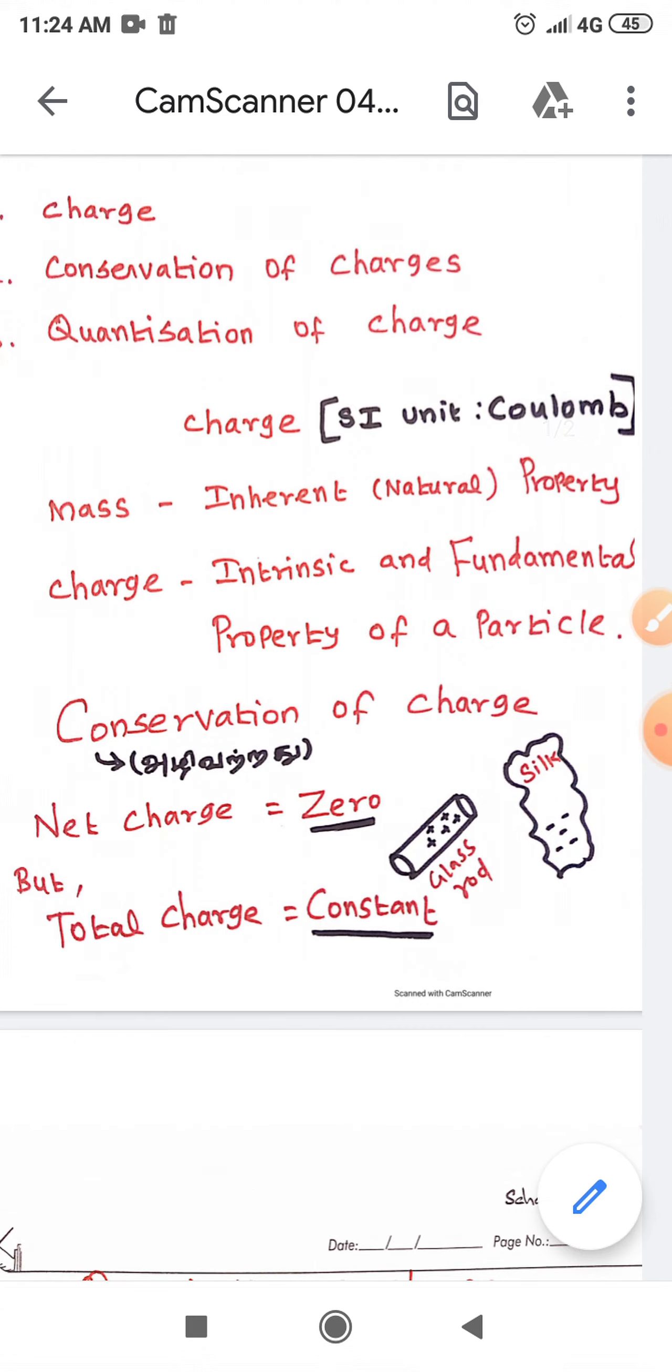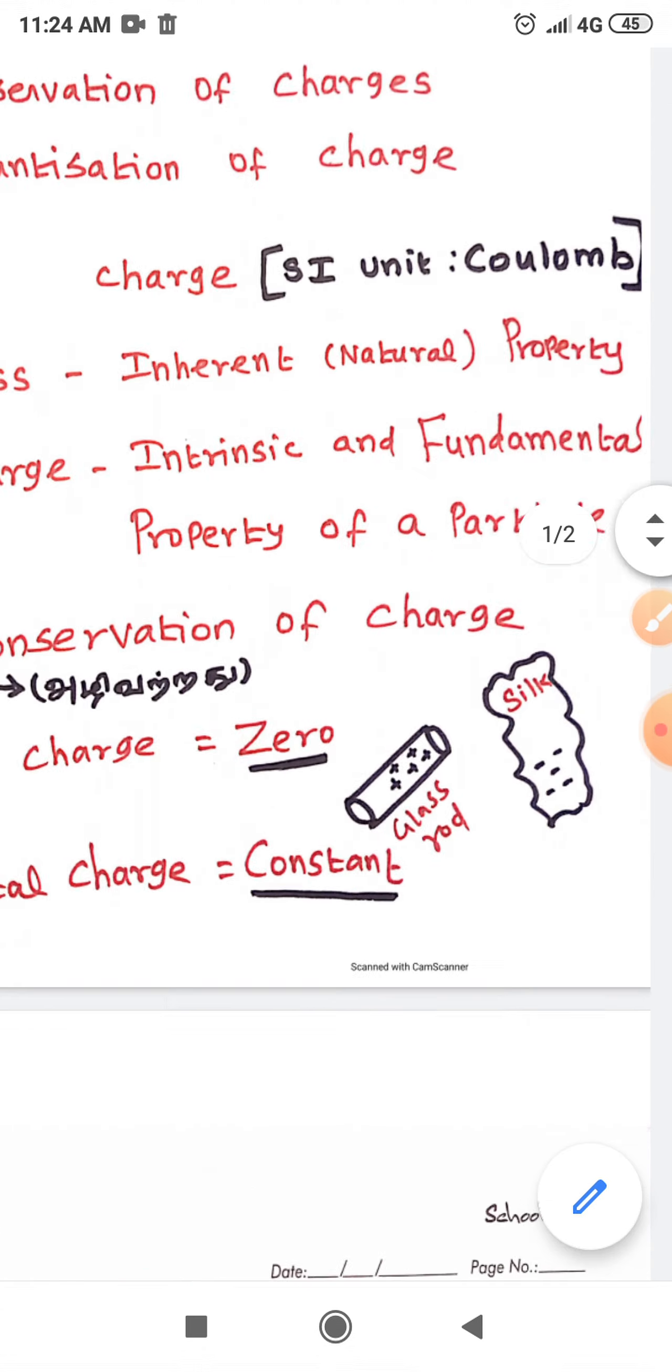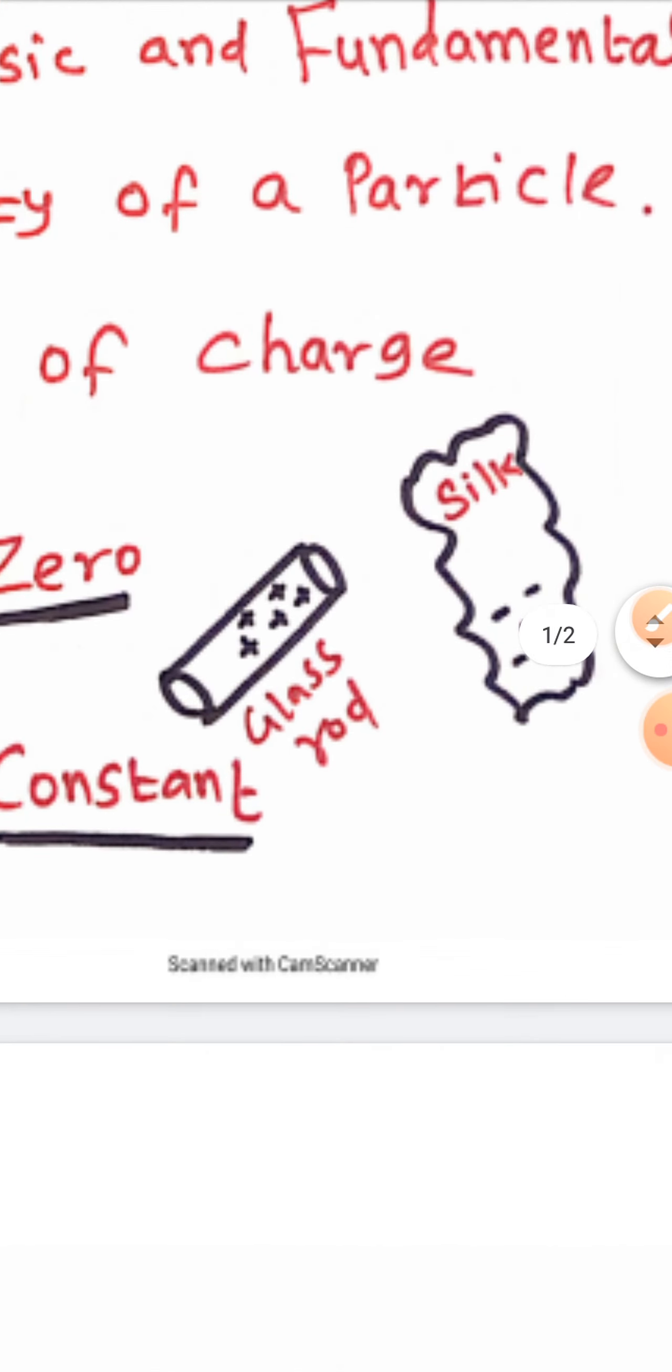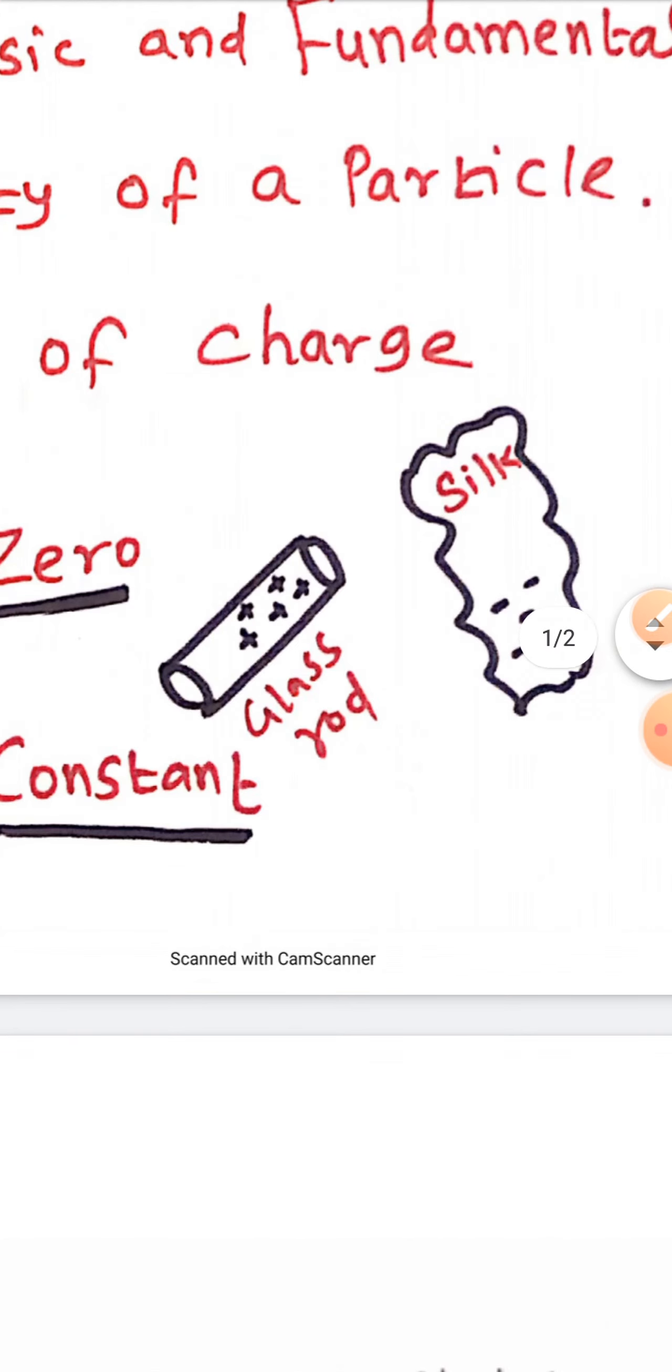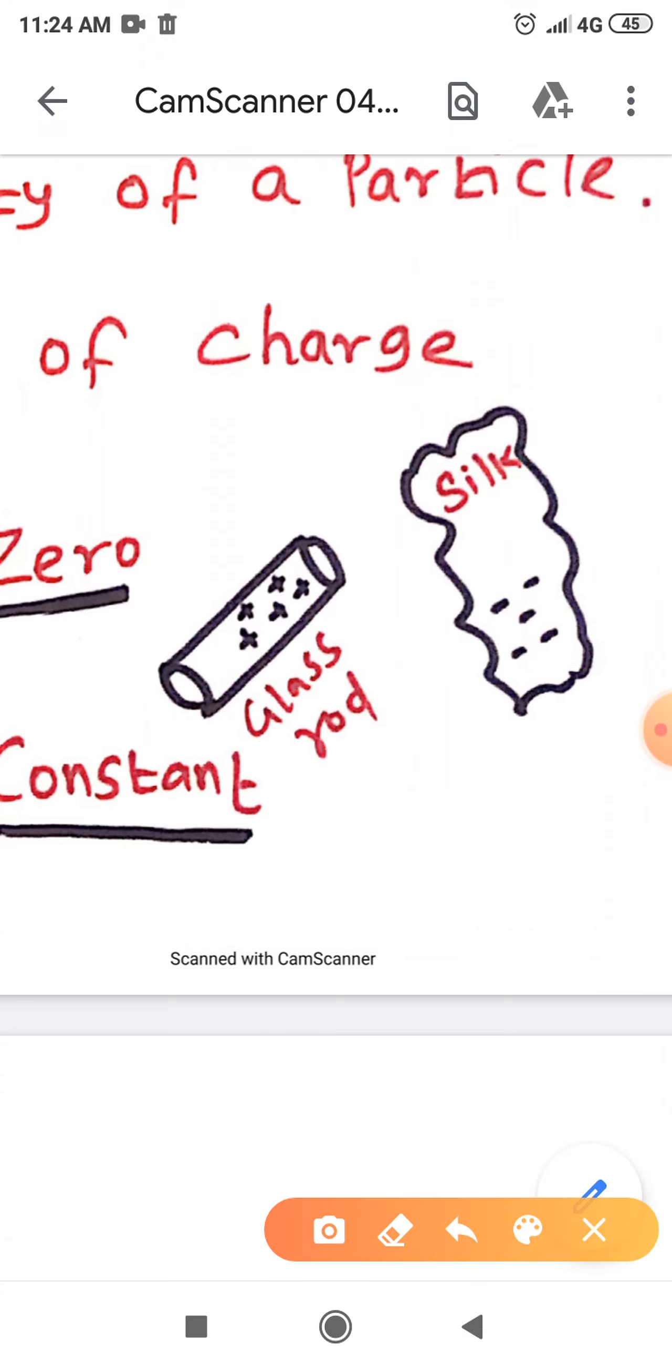Sir, how do you say the total charge is constant? So, during the process, no positive and negative charges are created or produced. During the rubbing, the silk material gains electrons from the glass rod. Therefore, the silk material acquires negative charges.